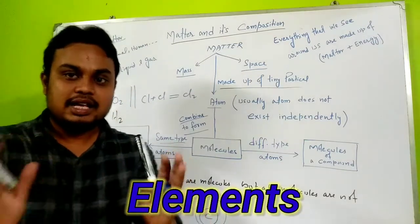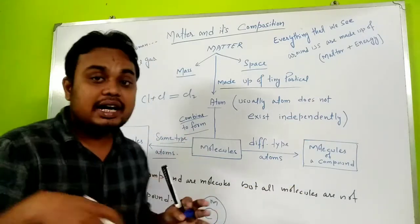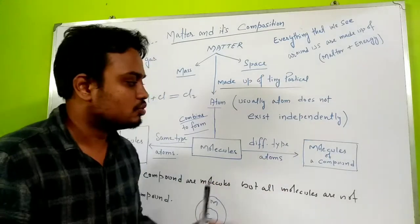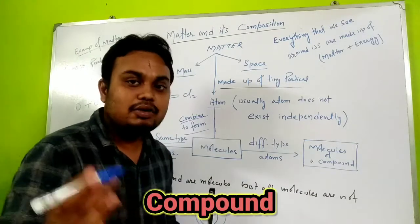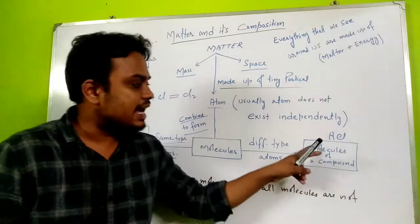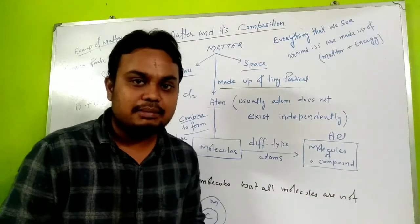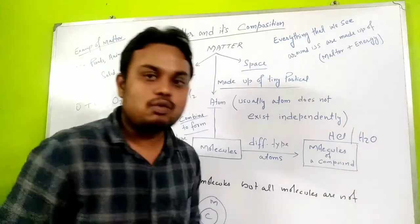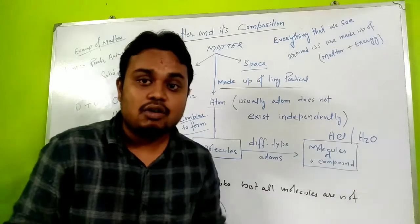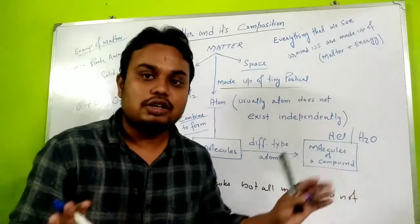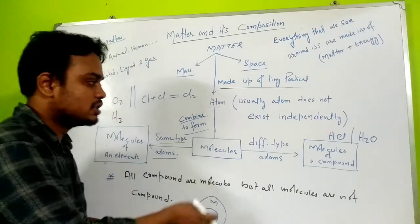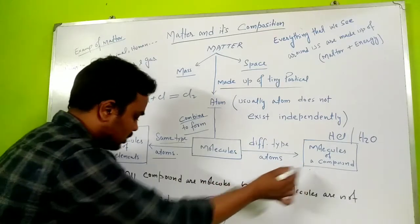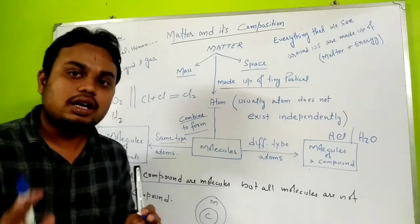If similar types combine, it's molecules of an element. But if different types combine, different atoms combine, then we call it molecules of a compound. For example, look at HCl. Here we have one hydrogen and one chlorine - two different atoms combining. This is called molecules of a compound.